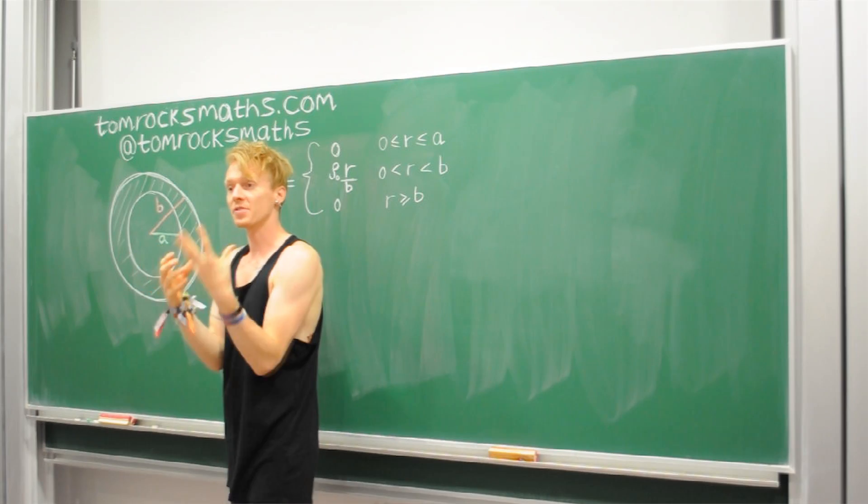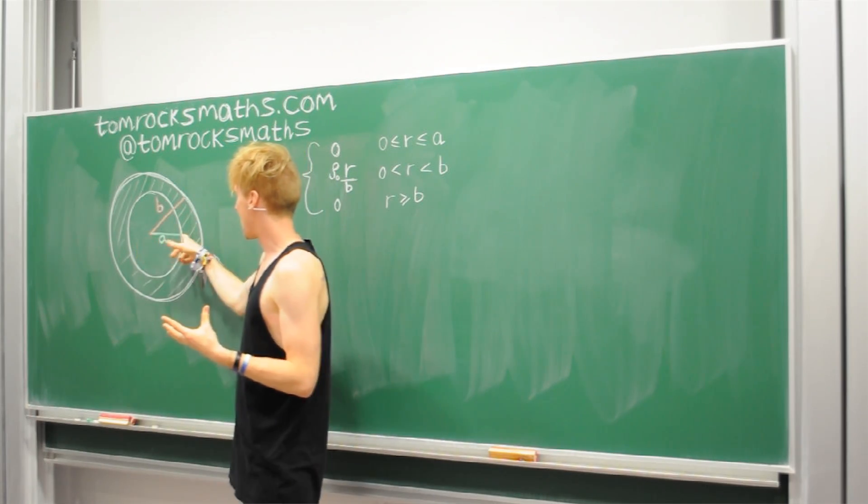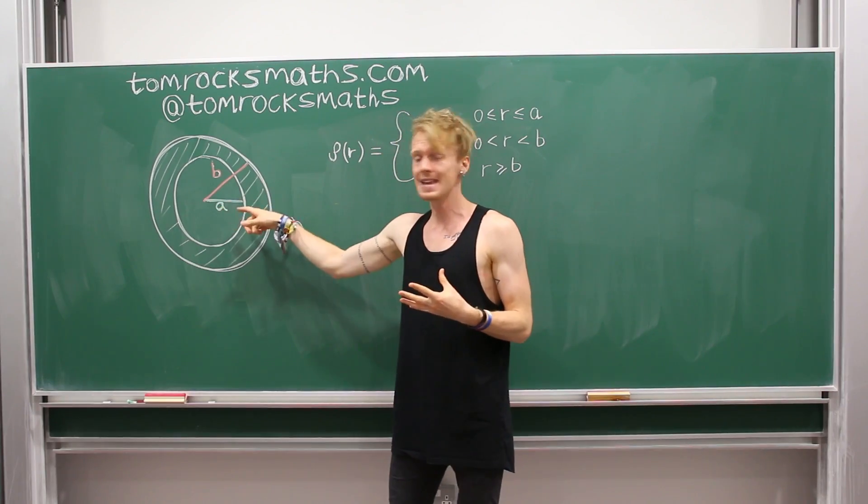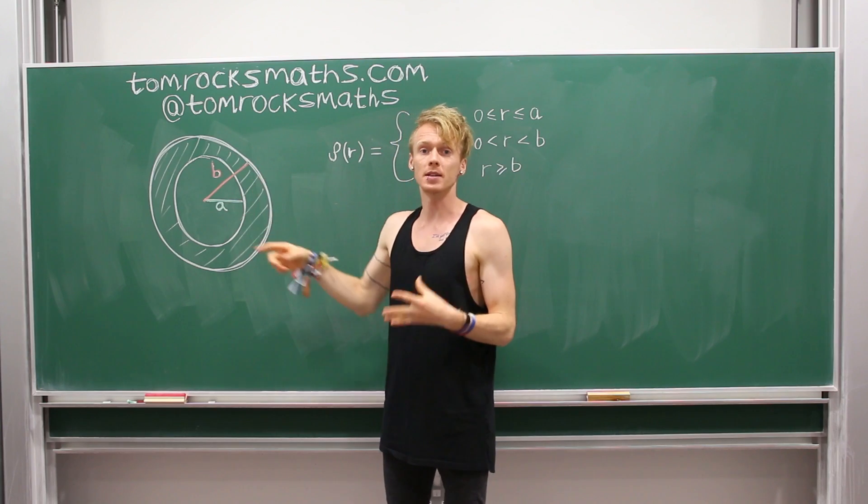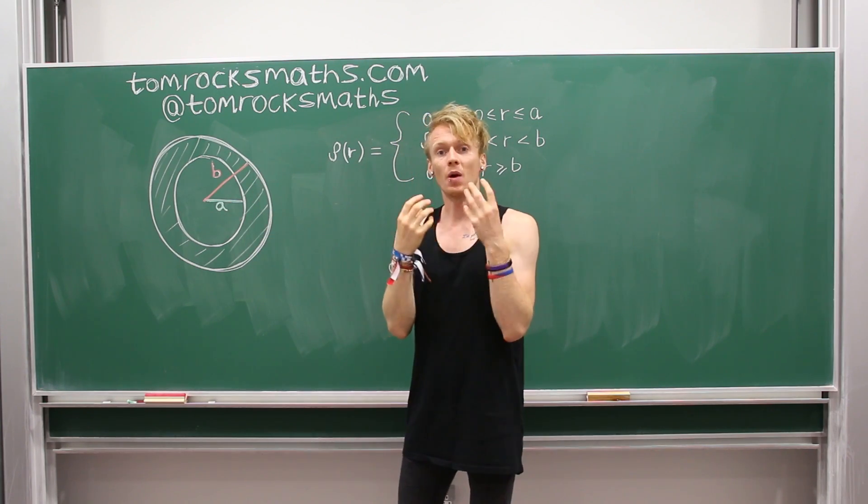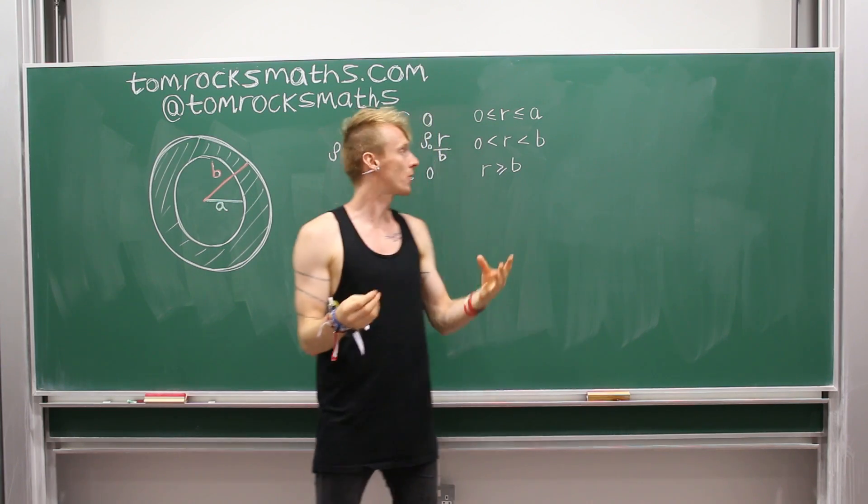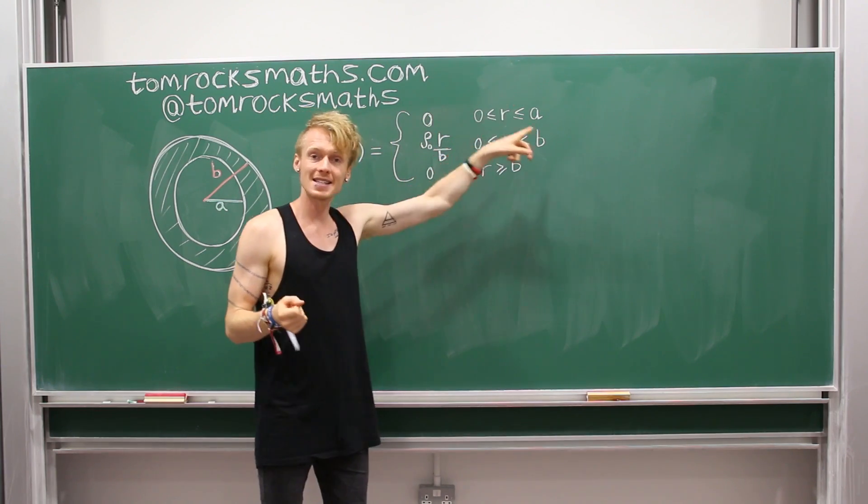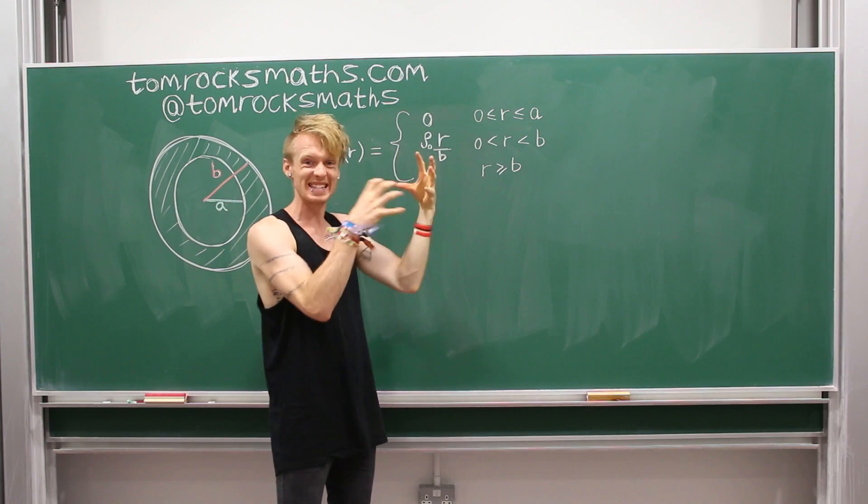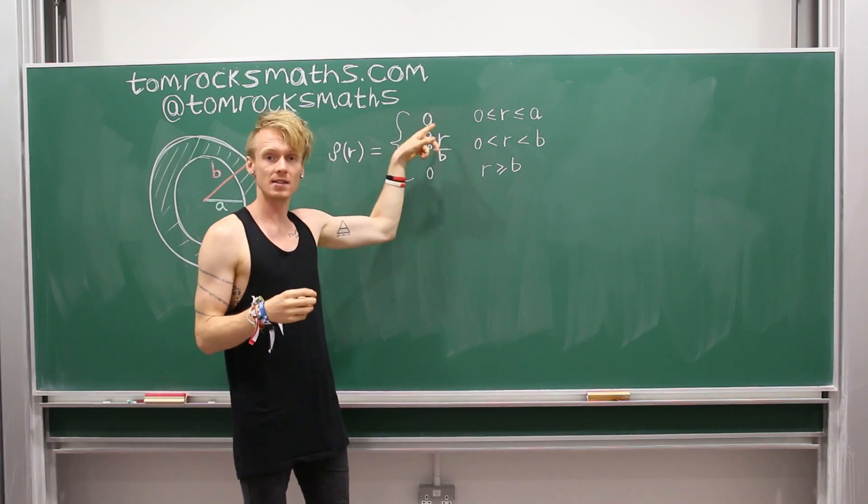And the way I've defined this is such that the inner ring has radius A and then the outer ring has radius B. And so what that means is when you look at the distribution of density in our Earth, when the radius is less than or equal to A, so inside the hollow bit, the density is zero.